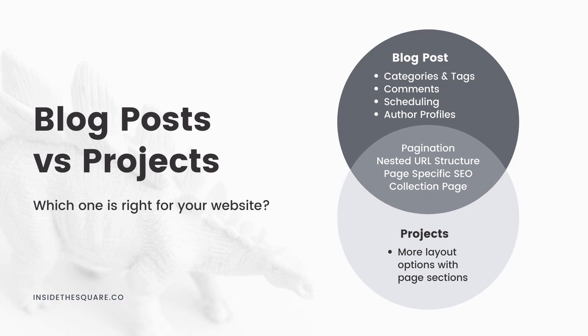Projects are different because you get more layout options. Projects are made up of page sections, whereas with blog posts you have just one main block of content — you don't get to add page sections above or below on an individual post page. That is specific to projects. However, projects don't have categories or tags, they don't have comments, you can't schedule them in advance, and you can't create an author profile. They do have pagination, nested URL structure, and project-specific SEO.